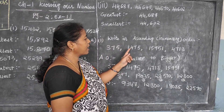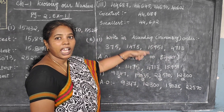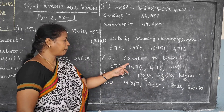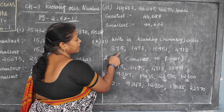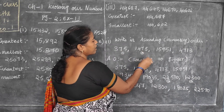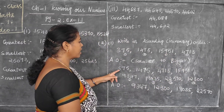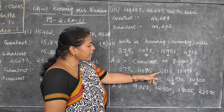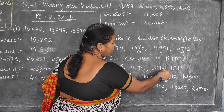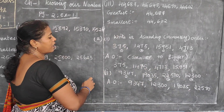First question: they gave 375, then 1475, then 1591, then 4713. This is the question — you can write directly from the blackboard, exercise 1.1. Now ascending order is from smaller to bigger. Smallest first is 375, next 1475, next 4713, then 15,951. Don't put commas, children, because there are already 4 numbers — if you put commas again you will get confused.